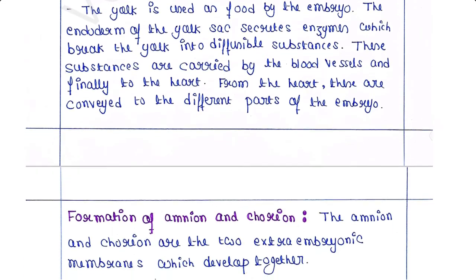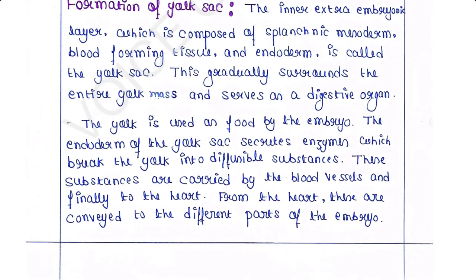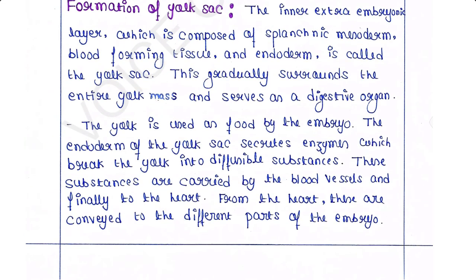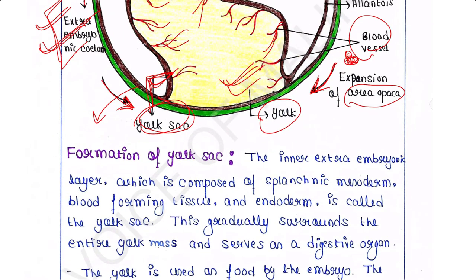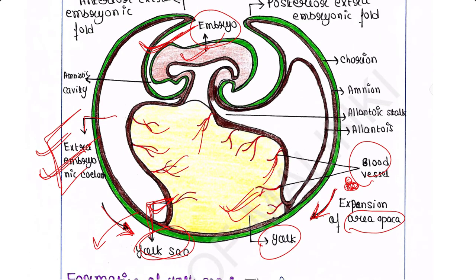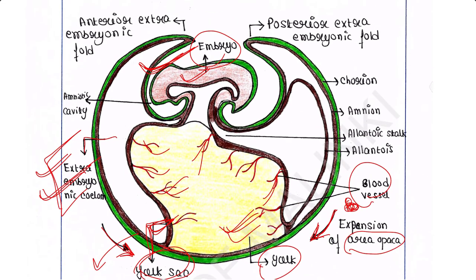Notes on yolk sac formation: The inner extra-embryonic layer composed of splanchnic mesoderm, blood-forming tissue, and endoderm is called the yolk sac. It gradually surrounds the entire yolk mass and serves as a digestive organ. The yolk is used as food by the embryo. The endoderm secretes enzymes which break the yolk into diffusible substances, carried by blood vessels to the heart and then to different parts of the embryo.